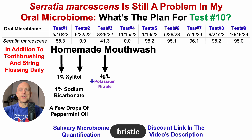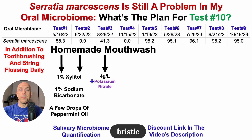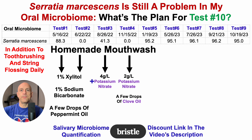For test number three, to this mouthwash I added four grams per liter of potassium nitrate, as nitrate has been shown to act as a prebiotic for the oral microbiome — feeding some of the good bacteria while crowding out some of the bad. I'm already on a high nitrate-containing diet. With four grams of potassium nitrate added, Serratia was 41% — still not zero, but on the right track. For test number four, I reduced the potassium nitrate to two grams per liter and also added a few drops of clove oil. Here we can see test number four showed zero Serratia. So maybe this mouthwash formulation did have something to do with potentially reducing Serratia.